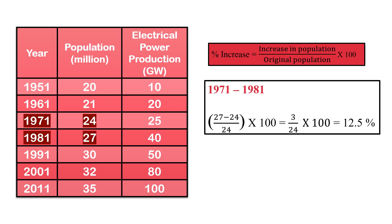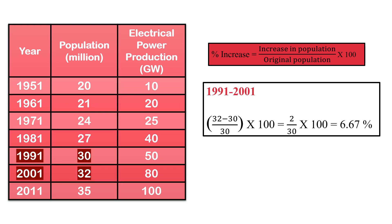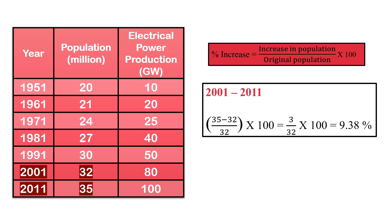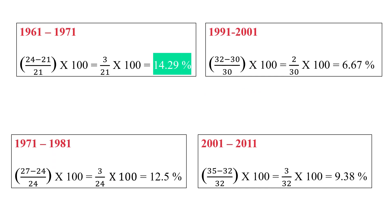Using the same formula, we calculate the percentage increase for the remaining options. Option B, 1971-1981, the percentage increase is 12.5%. Option C, 1991-2001, the percentage increase is 6.67%. And option D, 2001-2011, the percentage increase is 9.38%. Looking at all four decades, the highest is 1961-1971 at 14.29%, so option A is the correct answer.